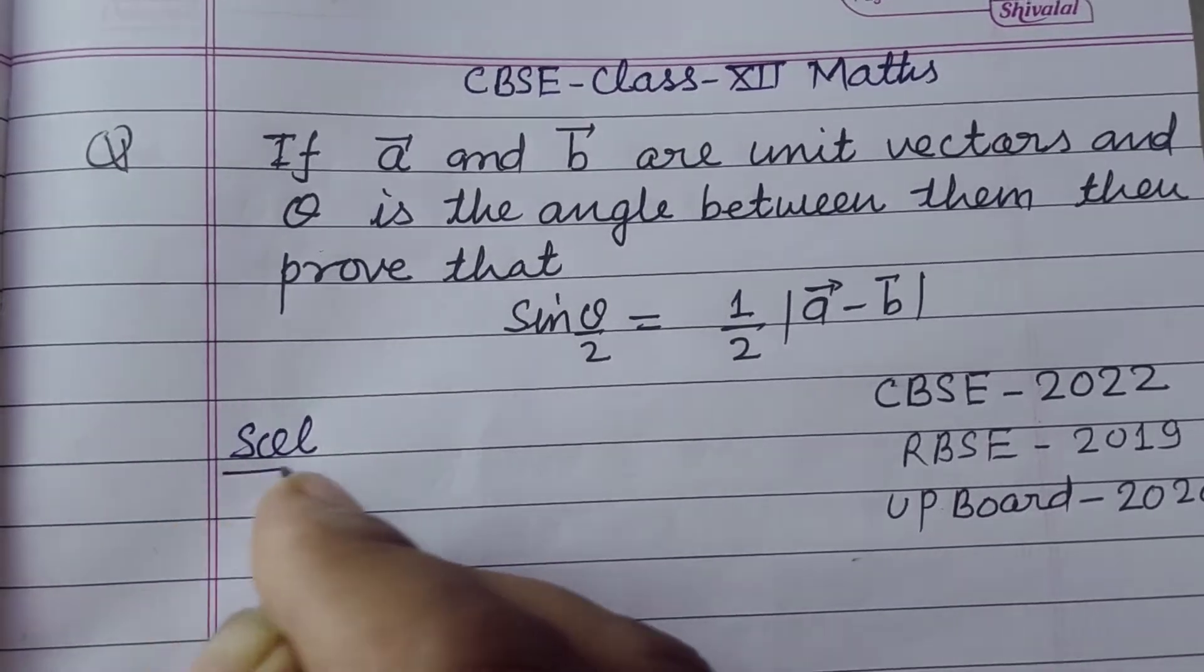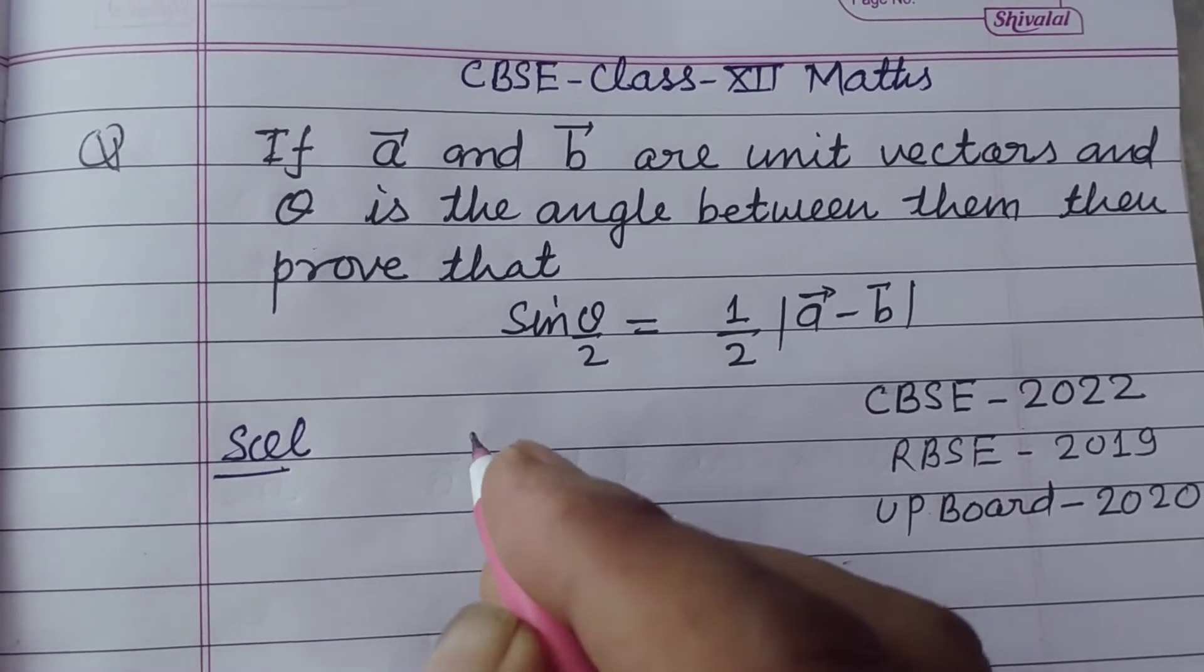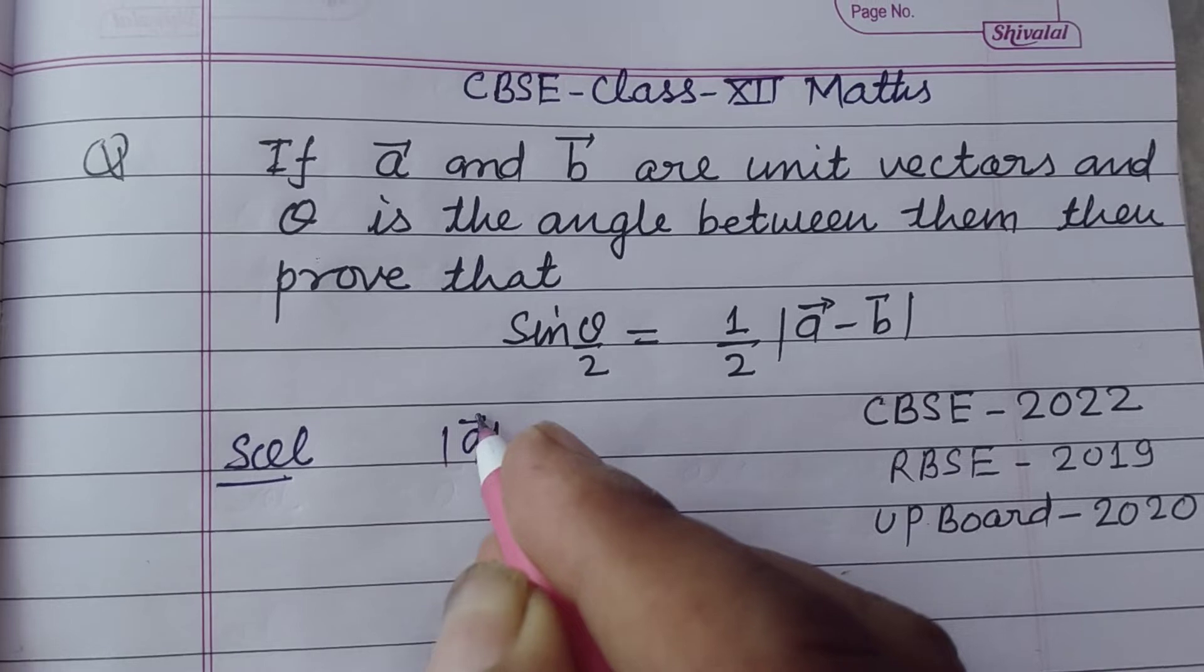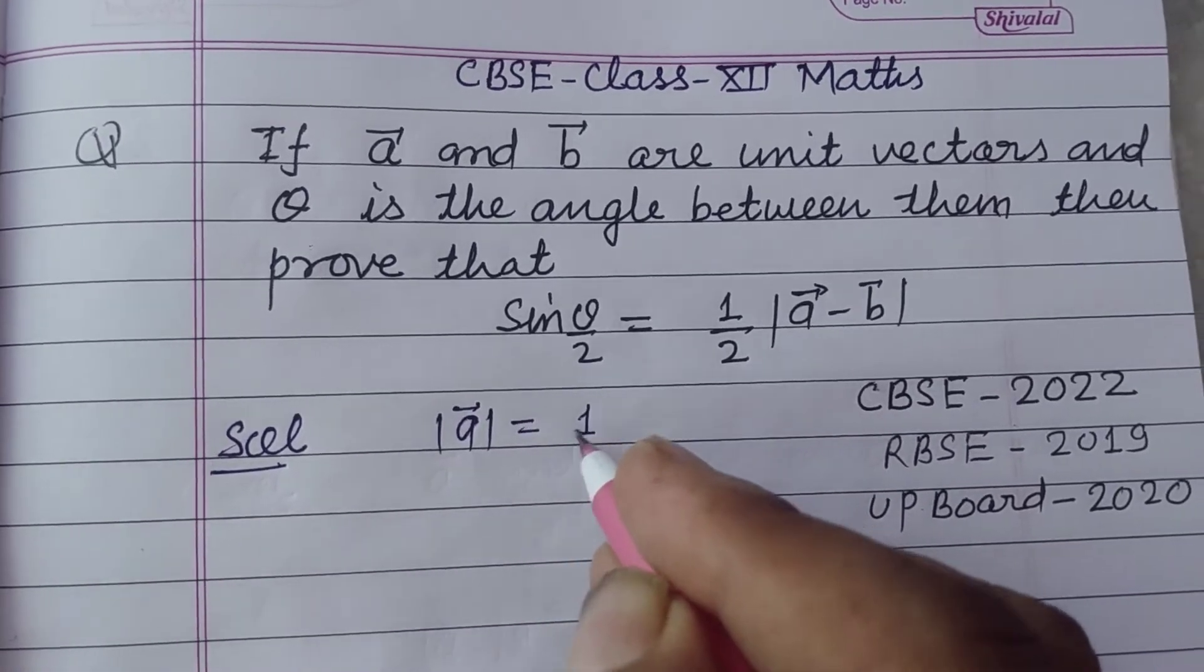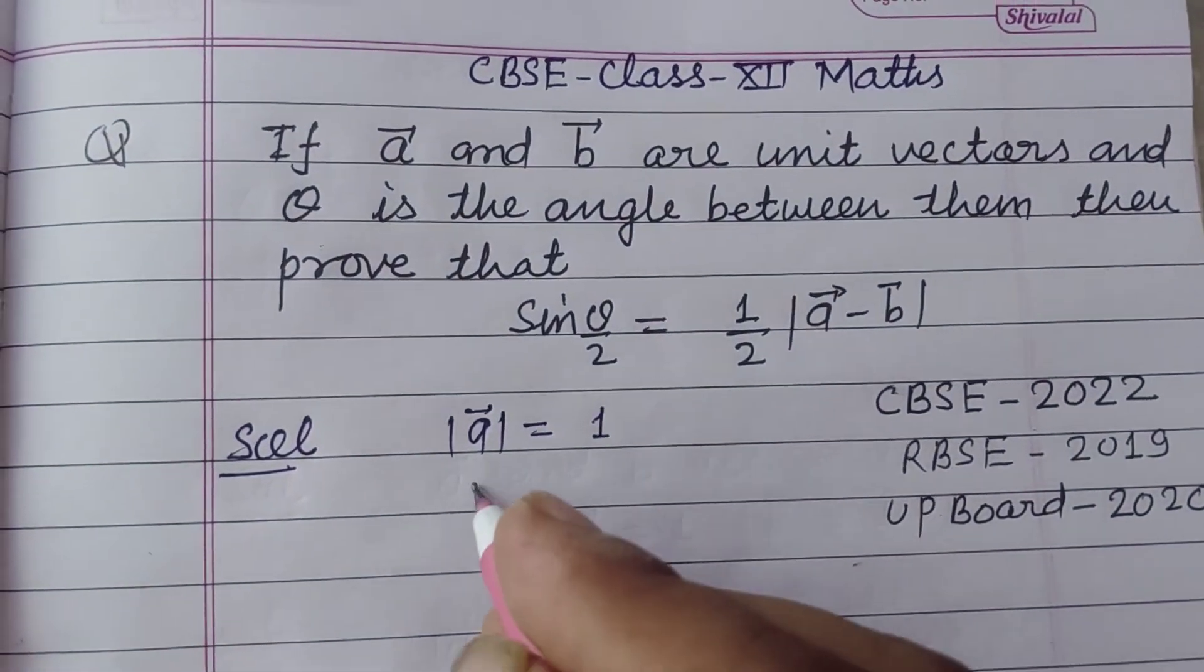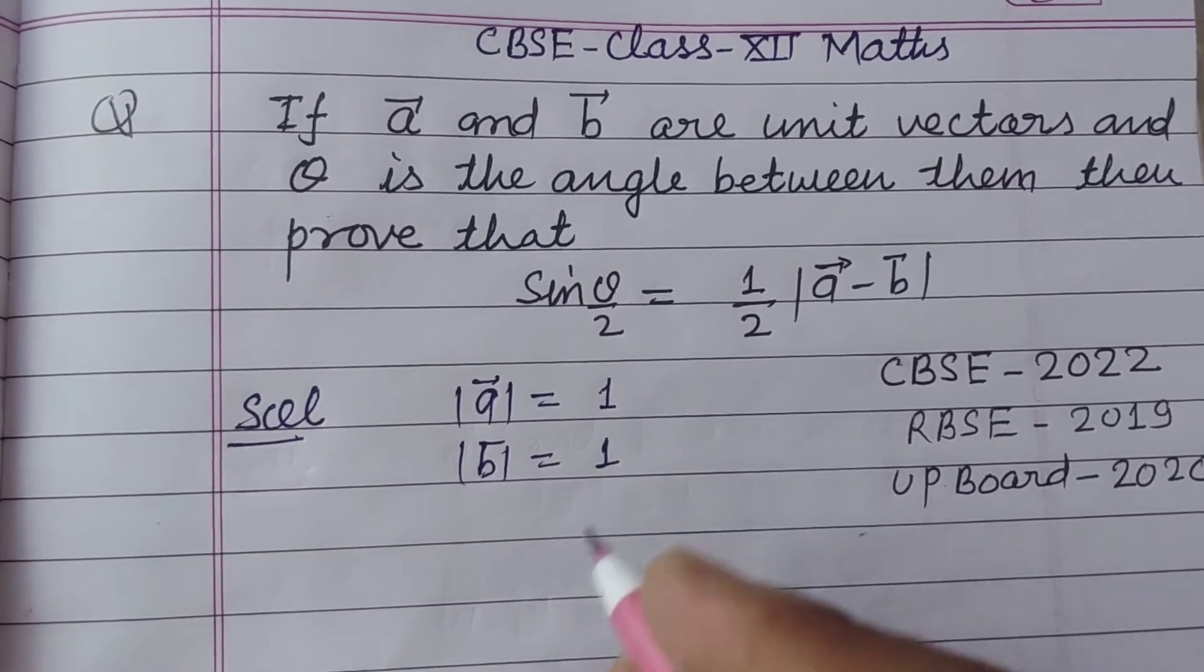So students, first we have it is given that A and B are unit vectors. It means mode of A is 1 and mode of vector B is also 1.